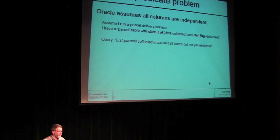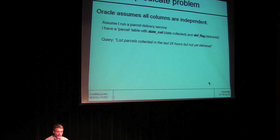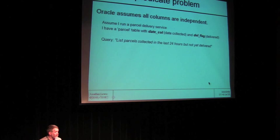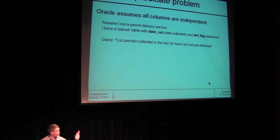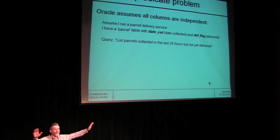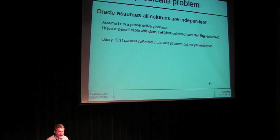Basically, what Oracle is doing is assuming all your column predicates are independent — and of course that's going to give you wrong answers at some stage. For example: a delivery service where you pick up parcels and deliver them. You run a query: tell me about things picked up in the last 24 hours which I have not yet delivered. The things you haven't delivered are almost always the things you've only just picked up — you're almost putting in the same predicate twice, with a huge overlap. But Oracle says: one in a thousand picked up in the last 24 hours, one in a thousand not yet delivered — you've only missed one in a million in the last 24 hours. And so you get the wrong plan.